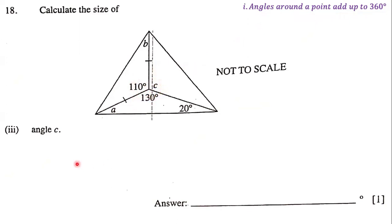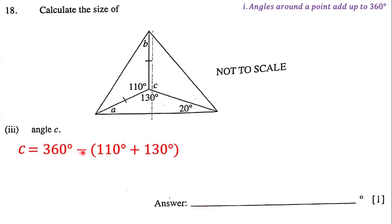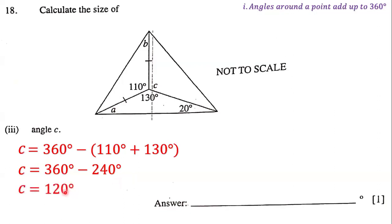In order to determine the size of angle C, we first add 110 and 130, then subtract that sum from 360. So angle C is going to be 360 degrees minus 110 plus 130. Now 110 plus 130 equals 240. So angle C is equal to 360 minus 240. And 360 minus 240 is 120. The size of angle C is 120 degrees.